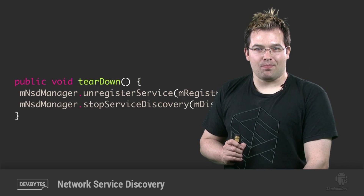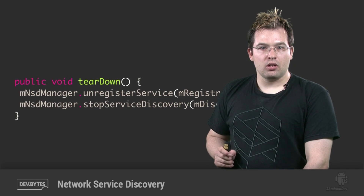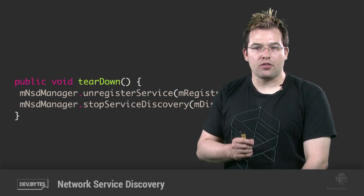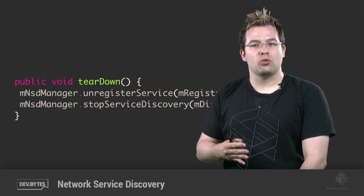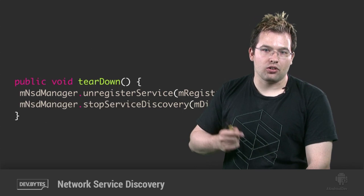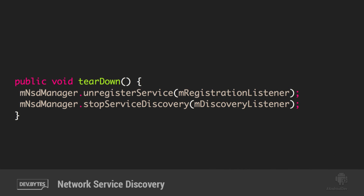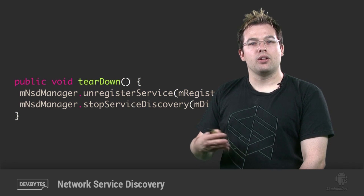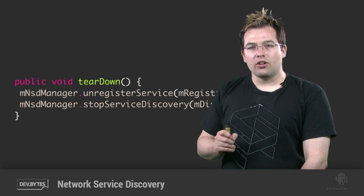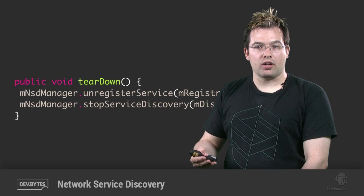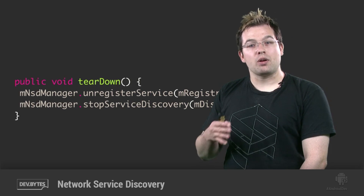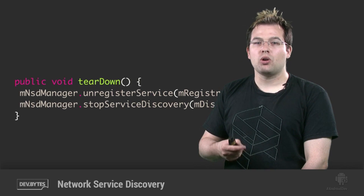Before you go off and play your game, there's one last thing you'll want to do. When your application exits, it's very important to unregister your service so that the OS will stop advertising it to other devices. To do this, call NsdManager's unregisterService method whenever your application's onDestroy or onPause method gets called. You'll also want to call stopServiceDiscovery, since the discovery process is also a bit expensive and we don't want to leave that running unchecked. And that's it — you're all set to use Network Service Discovery to find other copies of your app on the network. Happy networking!